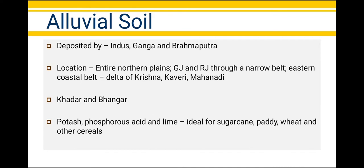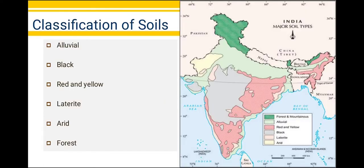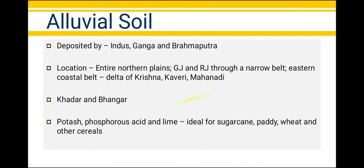The most important characteristic of alluvial soils is that they are very fertile. There is an adequate quantity of potash, phosphorus, phosphoric acid, and lime within them, which helps the growth of sugarcane, paddy, wheat, other cereals, and pulses. Because of its high fertility, this region has very high population density. In drier areas, these soils are more alkaline and can be productive after proper treatment and irrigation — such as in the plains of Rajasthan, where irrigation can make cultivation possible.